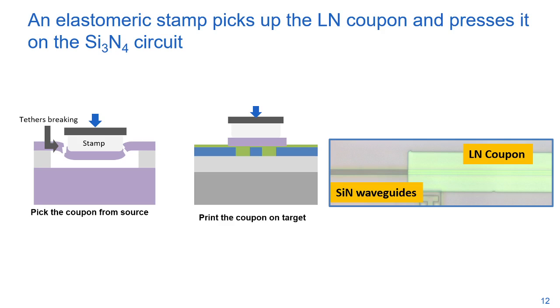The source and target samples are brought together in the transfer printing tool where an elastomeric stamp picks up the coupons from the source and presses them against the silicon nitride circuit, resulting in the microscope image on the right. Because lithium niobate is transparent, we can even see the waveguide underneath the coupon. Transfer printing might seem rough, but the following results demonstrate the quality of fabricated devices.